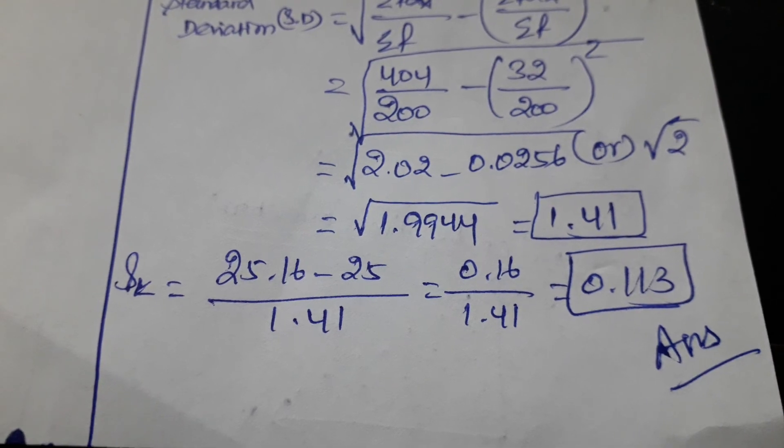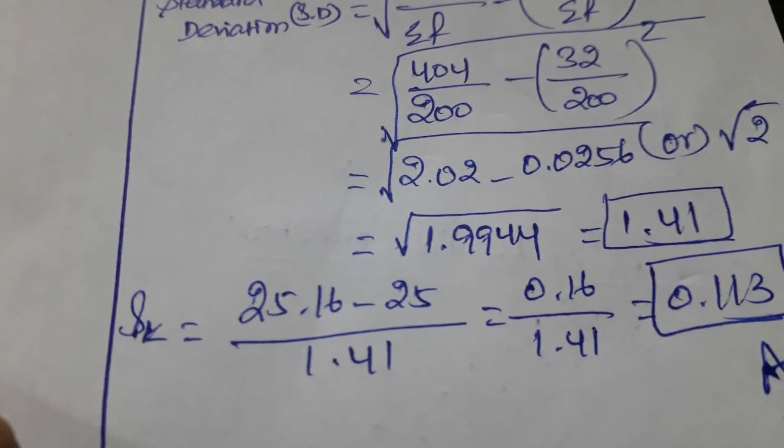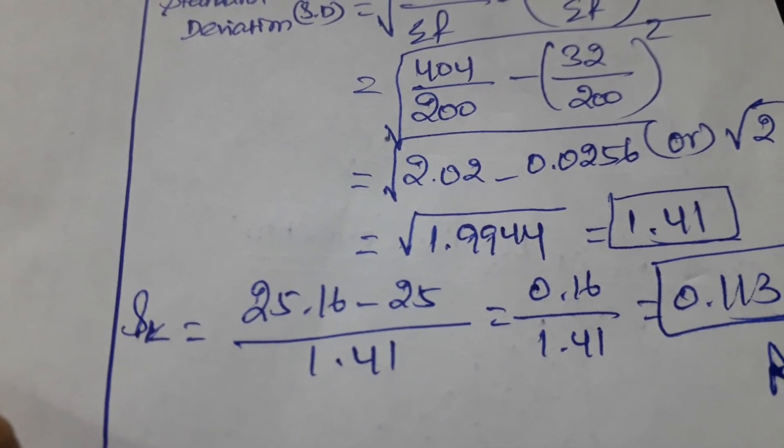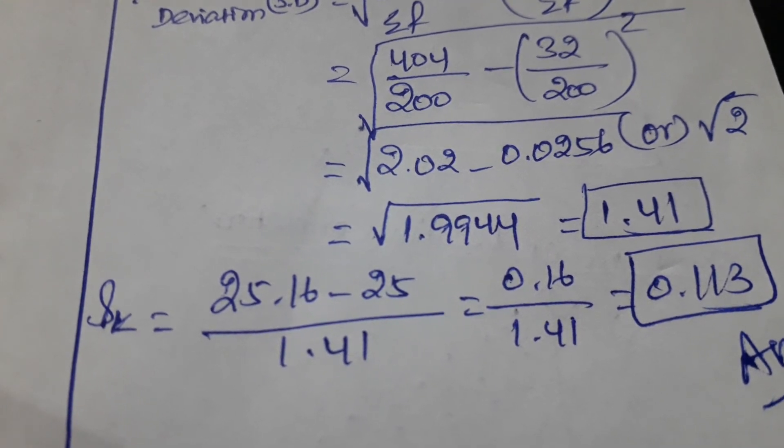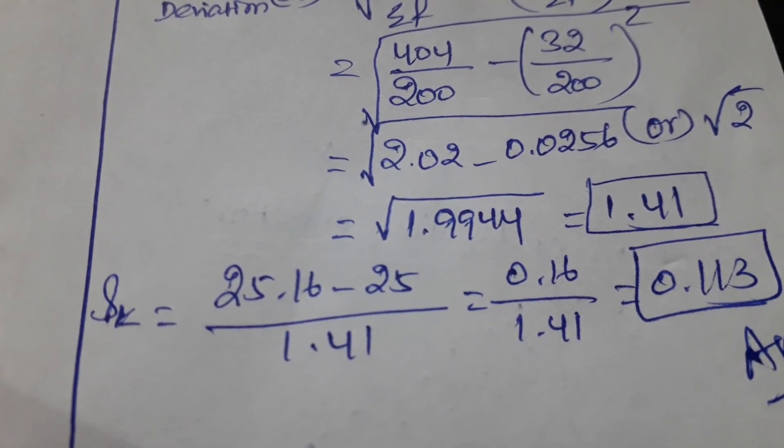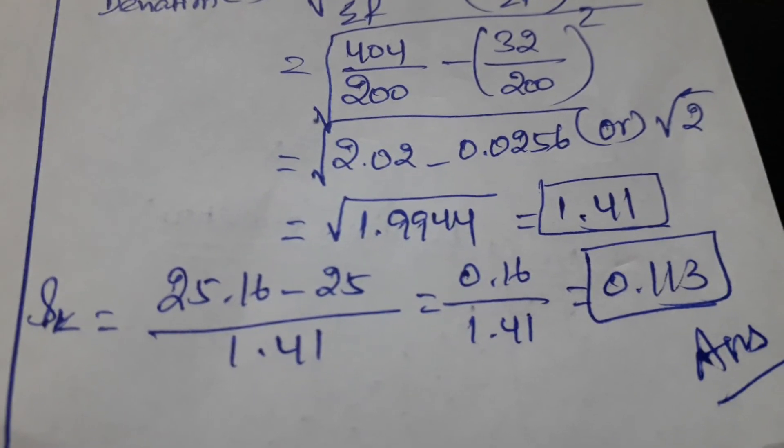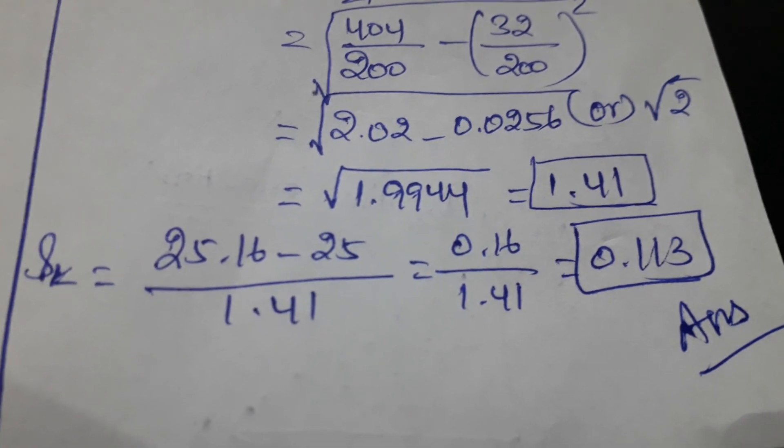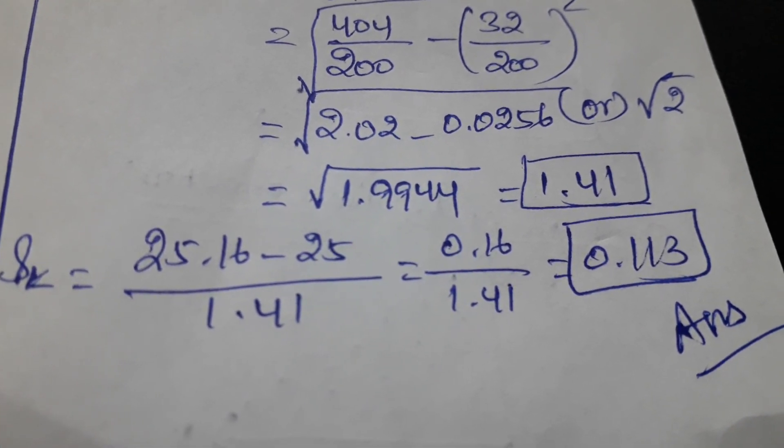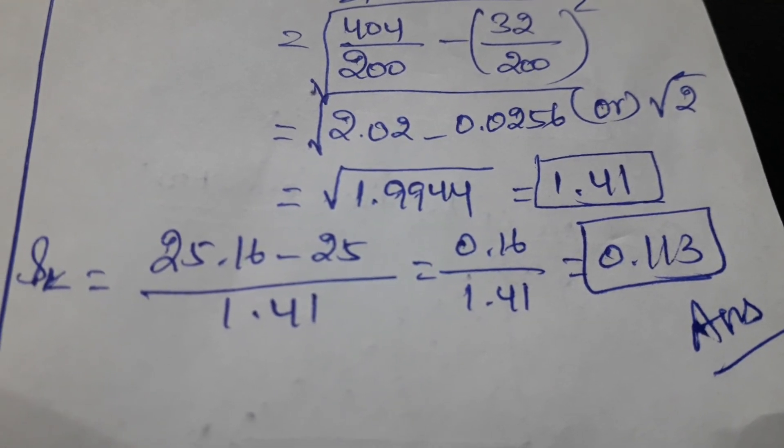So the final formula is skewness coefficient equal to mean minus mode upon standard deviation. Mean is 25.16, mode is 25, standard deviation is 1.41. If we apply these values, we can get the answer as 0.113. It's our final answer.